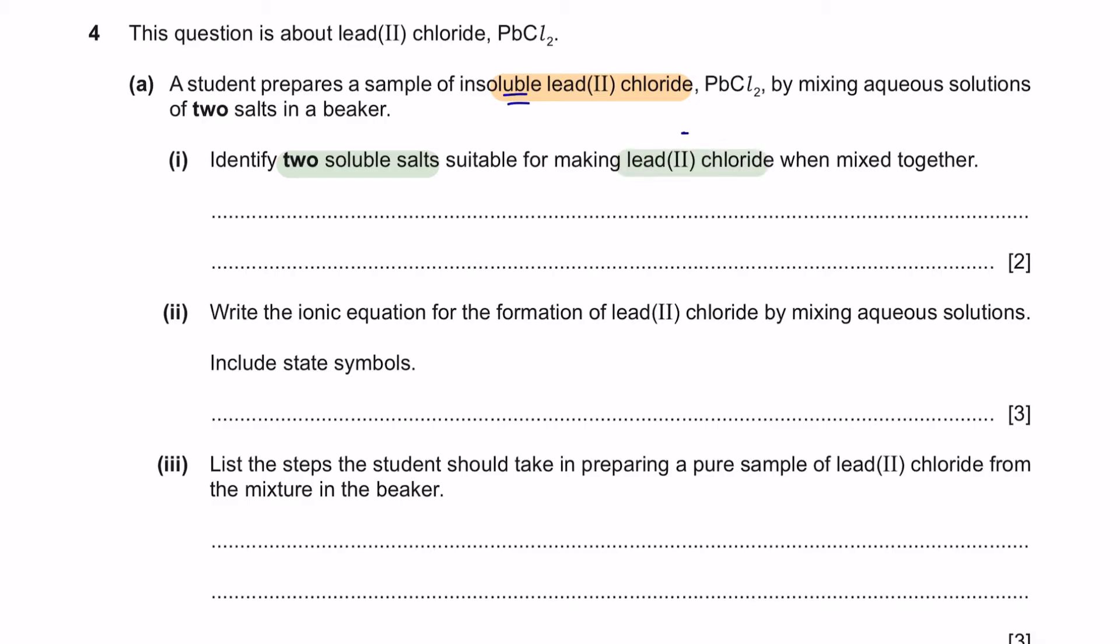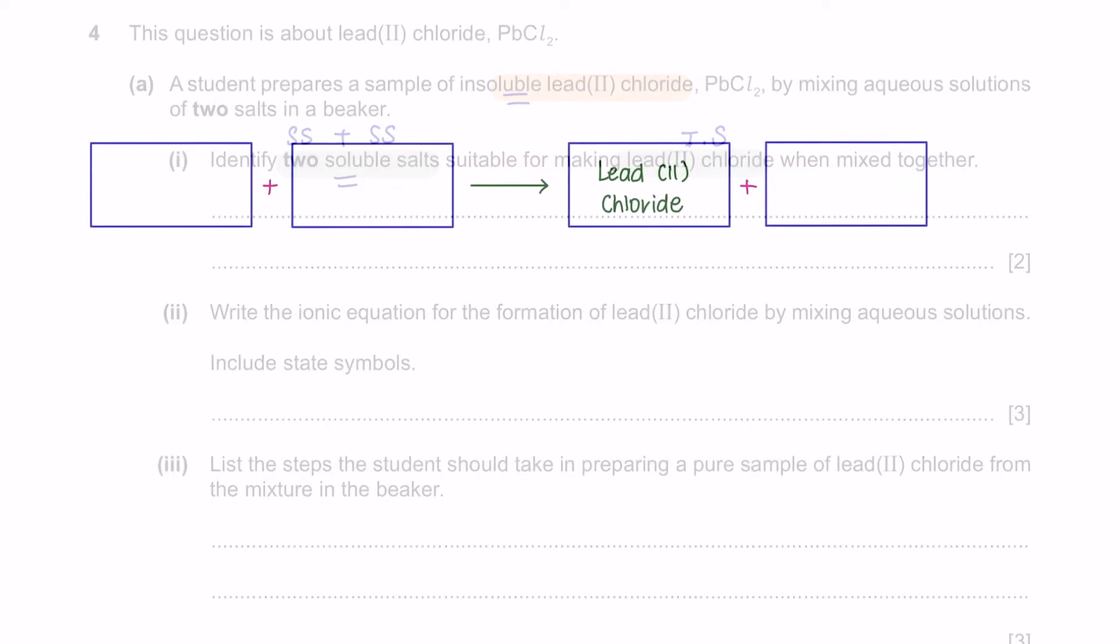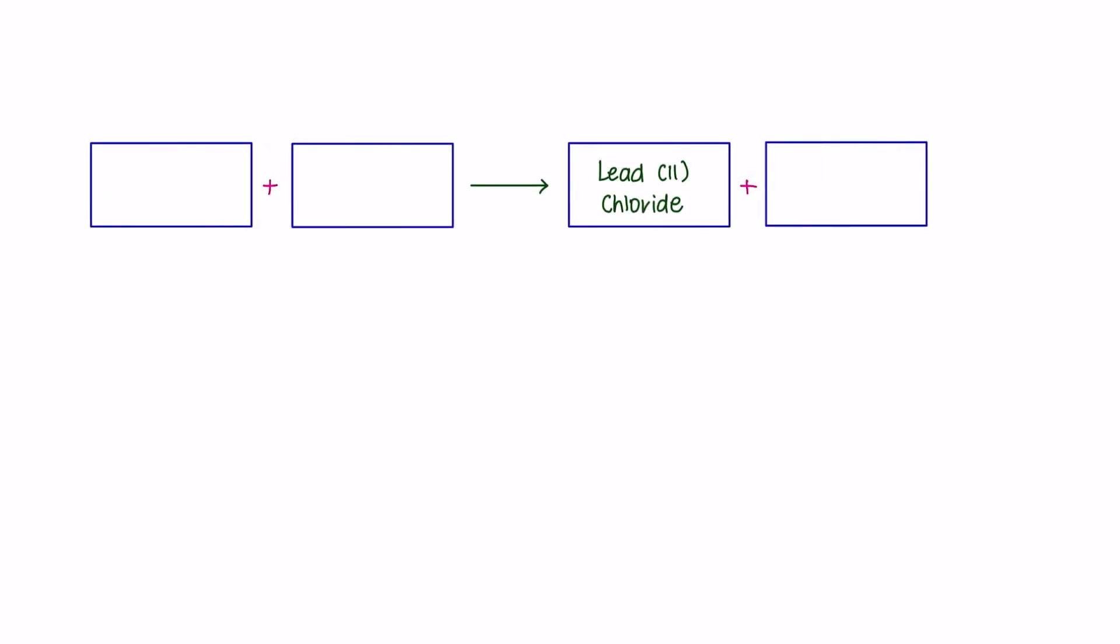So lead chloride is an insoluble salt. To make insoluble salts, we need two soluble salts reacting together. To get lead chloride, which is an insoluble salt, we need two soluble salts. One of them has to be containing chloride and the other has to be containing lead. So it will be lead something or something chloride, giving us lead chloride plus the other two elements.